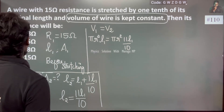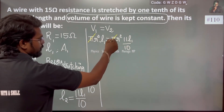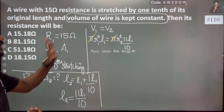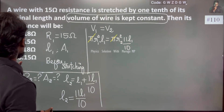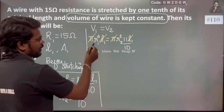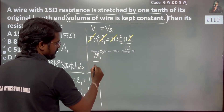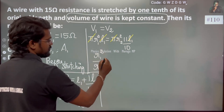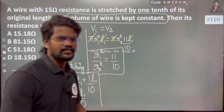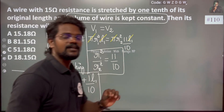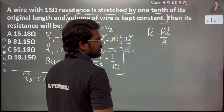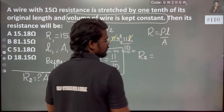From the volume conservation, we get the relation between R1 and R2: R1² divided by R2² equals 11 by 10. This is the basic relation. Now, resistance depends upon resistivity, length, and area. The new resistance R2 equals Rho times length divided by area.